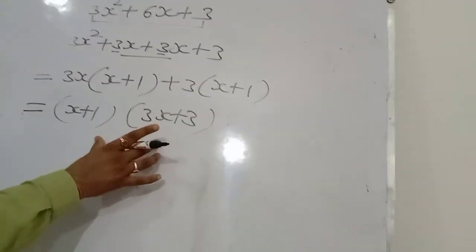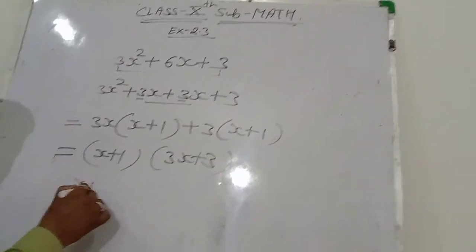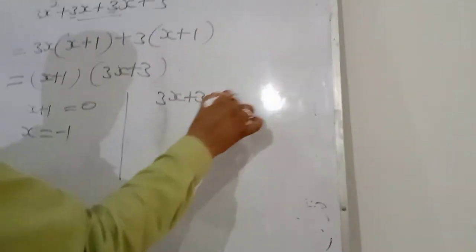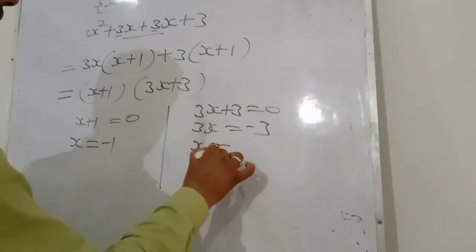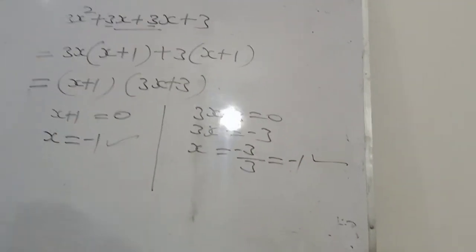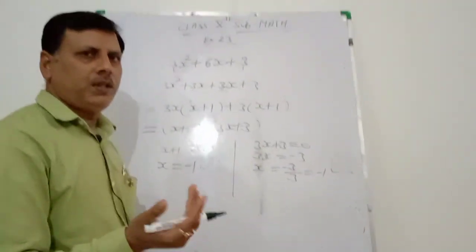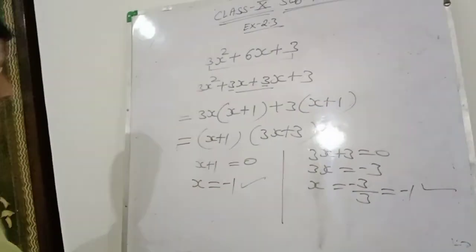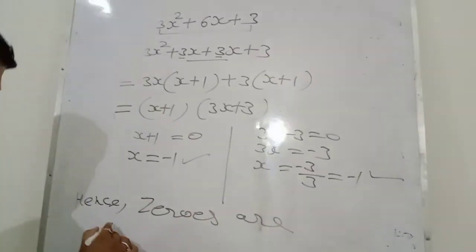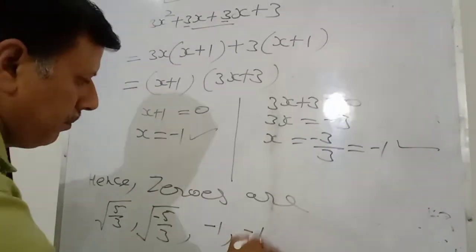हमें यहाँ पर जो दो factors मिले हैं, इनसे हम solve करके other zeros find करेंगे. If x + 1 = 0, then x = -1. If 3x + 3 = 0, then 3x = -3, x = -3/3 = -1. So student, यहाँ पर 2 zeros मिले: minus 1 and minus 1. Question में 2 zeros पहले से given थे — हमें other 2 zeros find करने थे. Total इस question में 4 zeros हैं: √(5/3), -√(5/3), -1, and -1.